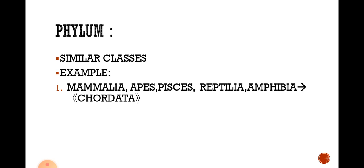The next category is Phylum. Similar classes come under a phylum. For example, Mammalia, Aves, Reptilia, and Amphibia are different classes which come under a phylum named Chordata.